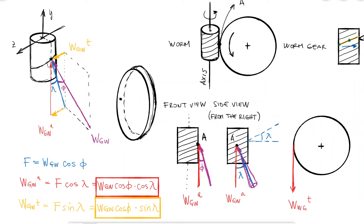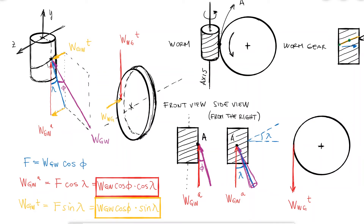We had already pointed out that the axial component of the force from the gear to the worm equals the tangential component of the force from the worm to the gear. Looking at the tangential component of the force from the gear to the worm — our yellow vector — the reaction force from the worm to the gear is in the same direction as the axis of the worm gear, and we label this reaction force W_WWG axial.